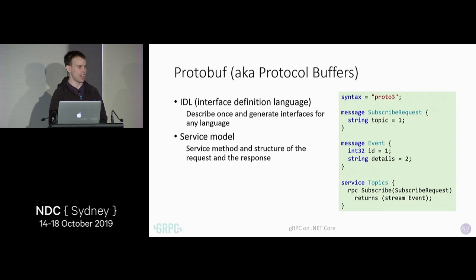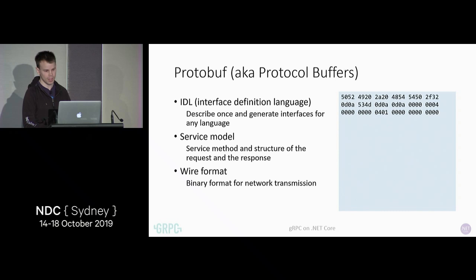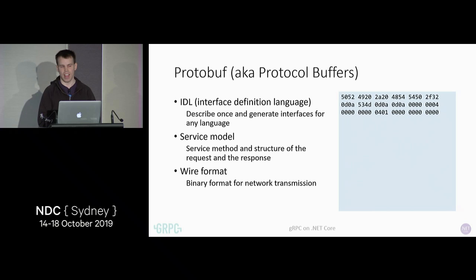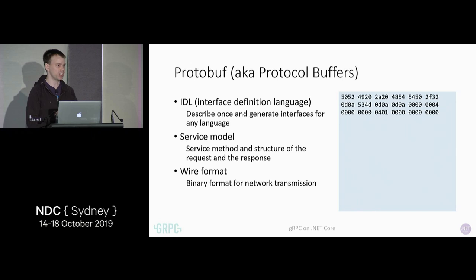Protobuf also acts as the definition of the service model. Here we have a topic service and then a method on that service called subscribe. You can think of a gRPC service like a controller and a method like an action. And then protobuf is the wire format — that's the actual serialization. It takes messages defined in C# .NET and turns them into a binary format that's small and fast. Then it gets sent across HTTP/2 to the client. Because this is an open standard, you get the benefits of a binary format — it's very fast — but also because it's standards-based, it's cross-platform.